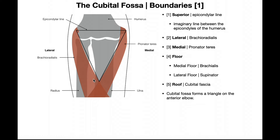The lateral border is made up by the brachioradialis muscle, and the medial border is made up by pronator teres. Those are the three boundaries that form this triangle. The floor of the cubital fossa is made up of a couple of muscles: brachialis on the medial side and part of the supinator muscle on the lateral side. The roof is the cubital fascia, which is a continuation of the brachial fascia above and continues down as antebrachial fascia in the forearm below.